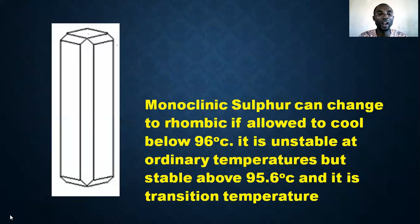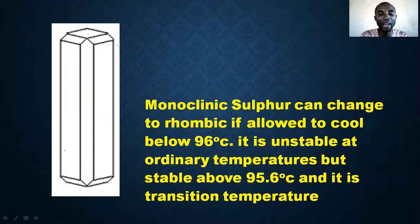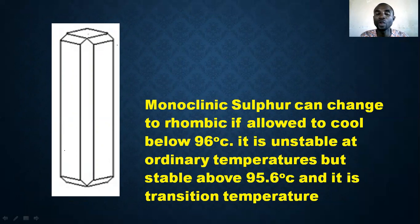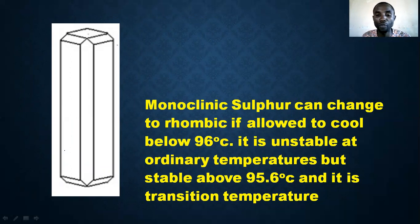Open the filter paper and you will see needle-shaped crystals — this is what we call monoclinic sulfur. Look at how it appears. Monoclinic sulfur can change to rhombic if allowed to cool below 96 degrees Celsius. It is unstable at ordinary temperature but stable above 96 degrees Celsius.